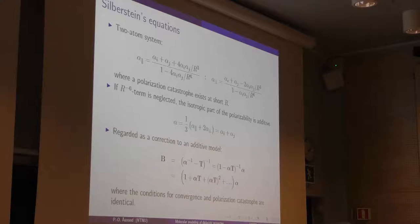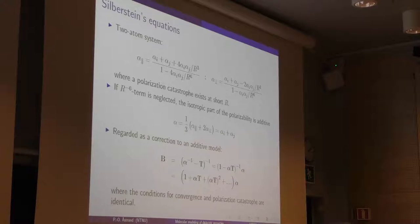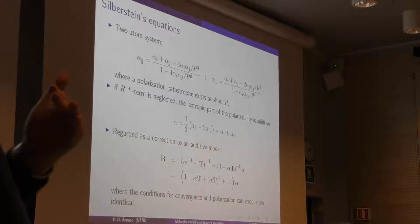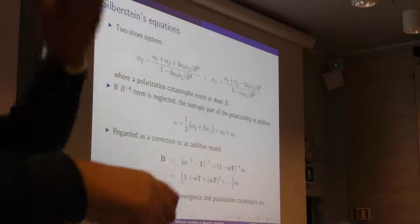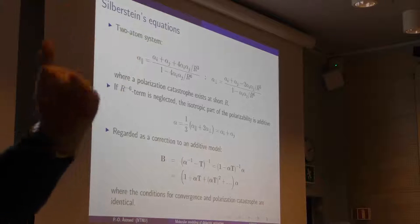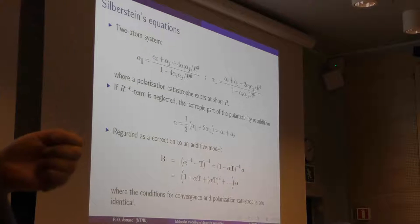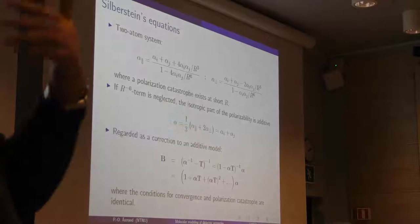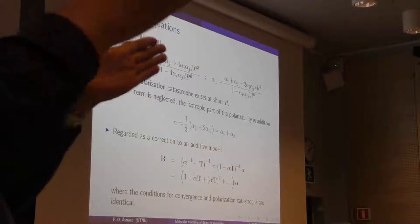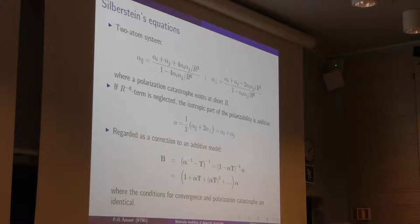If you solve that analytically — I'll only talk about the first equations for a two-atom system — it means that if the atoms come close to each other, the field will be very large on the other one and you get a divergence in the system. When we do time-dependent DFT to calculate excited states, we don't do a calculation on the ground state and excited state separately. What we do is look at the polarizability and see where it diverges, because the divergences of the polarizability are where we have the excitations.